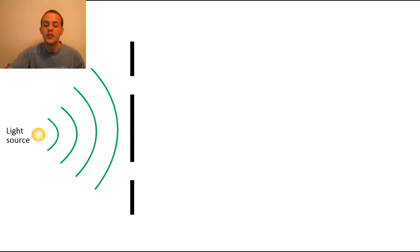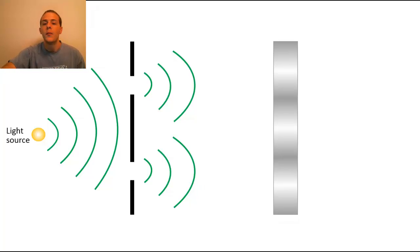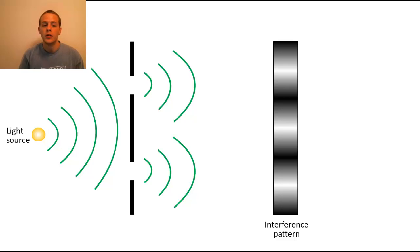Now when this happens, each slit is going to act like a new wave source, and ultimately what we're going to get is a pattern called an interference pattern. So again, if you shoot light through two slits and you observe the resulting image on a screen, what's going to result is this interference pattern that has alternating bright spots and dark spots.